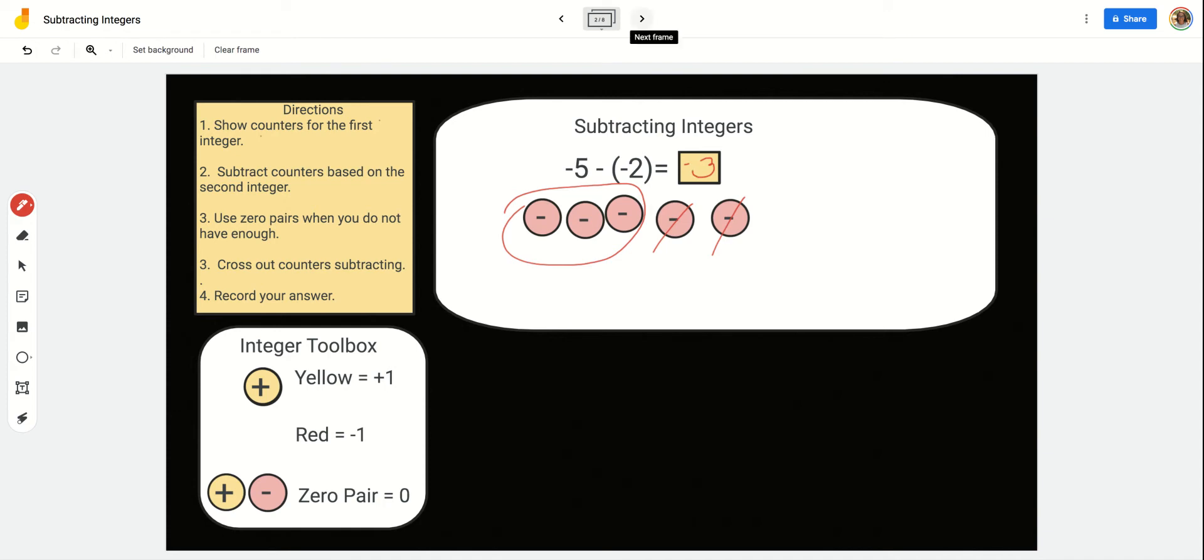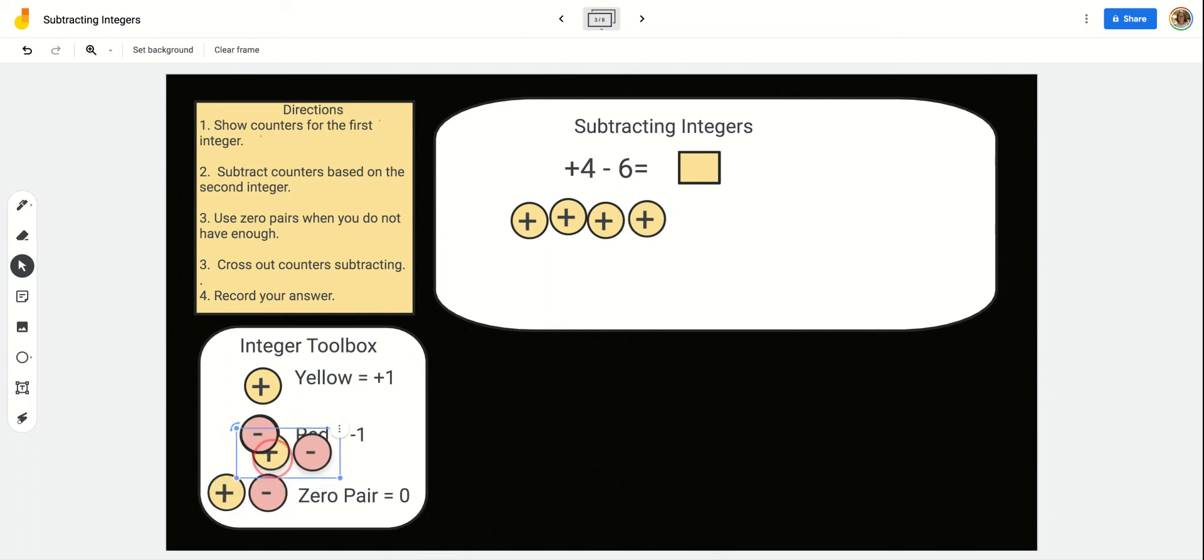Ready for another situation? All right, so now I have 4 positives. Let's pull that out of our integer toolbox. And I am going to take away 6. Looks like I only have 4. I don't have enough to take away 6 positives. So, when you don't have enough, you can use what is called a zero pair. It is a zero pair because a positive and a negative make 0. If you have 1 positive and you have 1 negative, it is equal to 0.